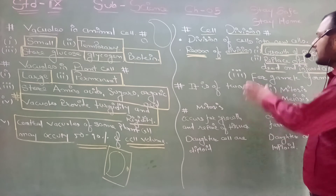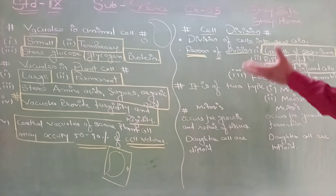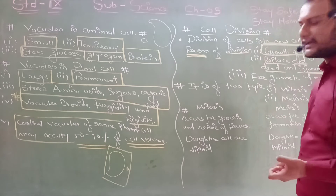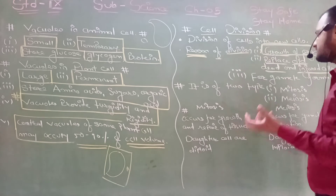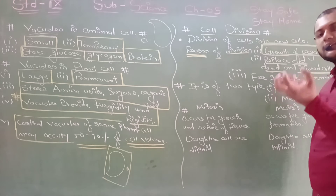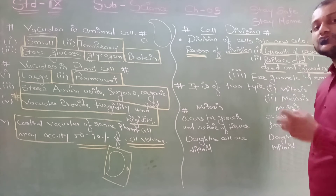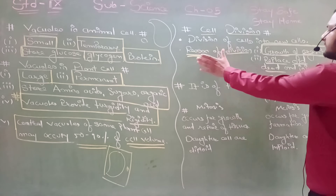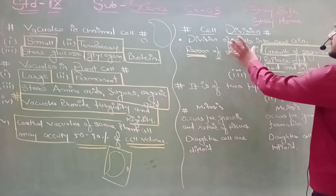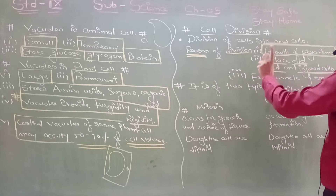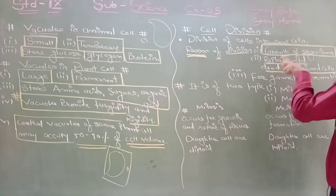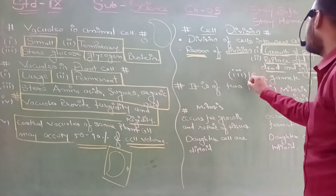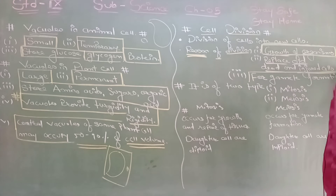If dead cells are not replaced by new ones, the total number of cells will keep decreasing. So dead and injured cells must be replaced by new cells. The third reason for cell division is the formation of gametes.